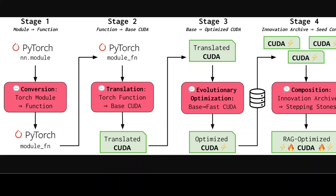Looking at the diagram from their paper, there are four stages to the pipeline. In stage 1, a module definition of PyTorch code is converted into a functional version that separates out the operator parameters. In stage 2, the functional version is translated into a corresponding correct CUDA kernel, which can be loaded to replace the native PyTorch version of the operation. In stage 3, the translated kernel is used to initialize the runtime optimization process. In stage 4, the system samples, edits, tests, and evaluates a batch of kernels in parallel, and then leverages the discovered kernels to retrieve related ones, which are used to enhance the in-context information for translation or optimization.